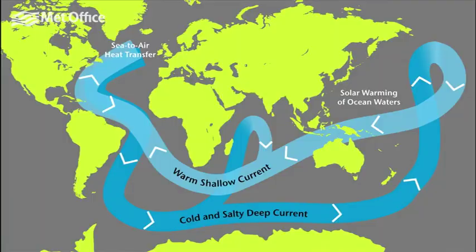This is more like what happens in the oceans where sea ice forms in the polar regions. The remaining water is left colder and saltier and sinks. This drives the large-scale circulation of the oceans.